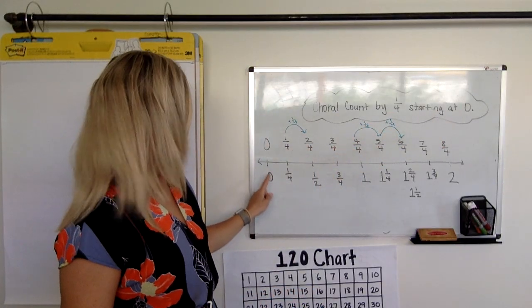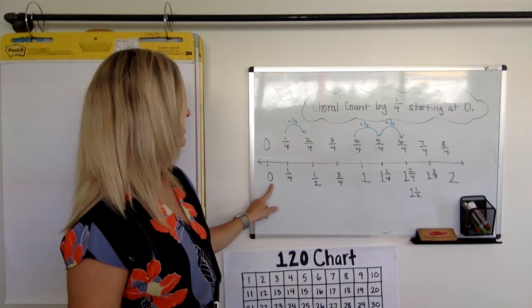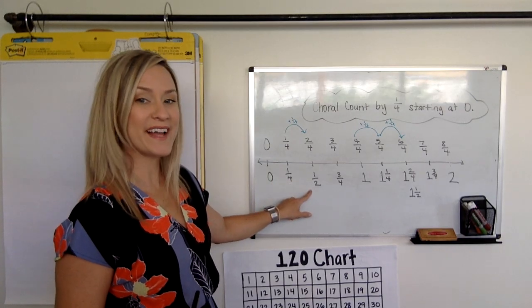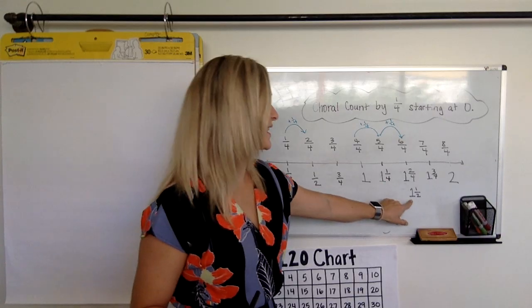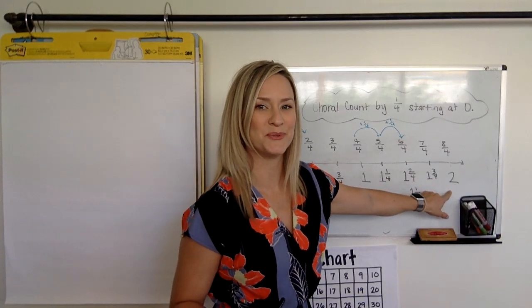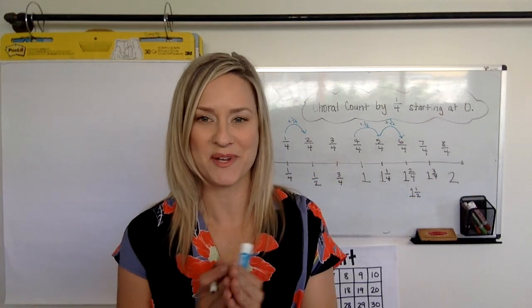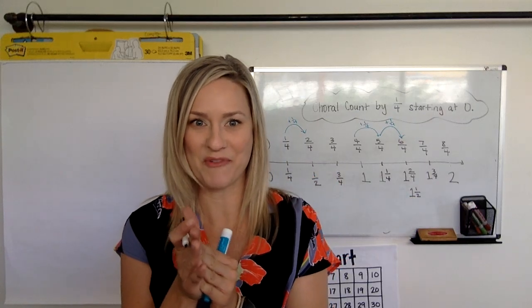So when we did our choral count by one-fourth starting at zero, we also, in a way, did the same count as this. Zero, one-fourth, one-half, three-fourths, one. One and a fourth, one and a half, one and three-fourths, two. It's the power of knowing improper fractions.